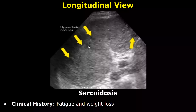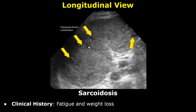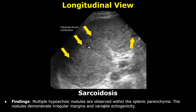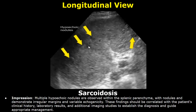Here is a case of sarcoidosis. The clinical history was fatigue and weight loss. These are the findings: multiple hypoechoic nodules are observed within the splenic parenchyma, demonstrating irregular margins and variable echogenicity. In the impression, we do not write sarcoidosis directly because the findings overlap with other abnormalities such as metastasis or tumors. So after writing the findings, we will write about clinical correlation, lab results and additional imaging studies.